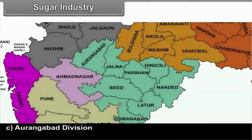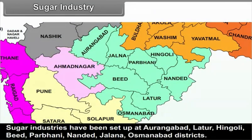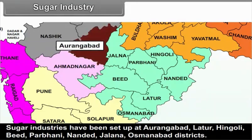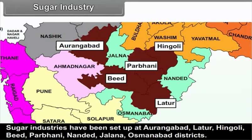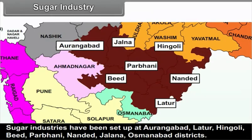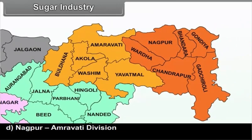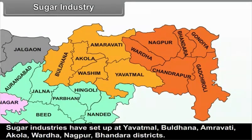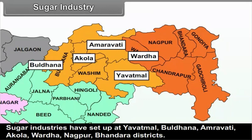Aurangabad Division: Sugar industries have been set up at Aurangabad, Latur, Hingoli, Beed, Parbhani, Nanded, Jalna and Osmanabad districts. Nagpur-Amravati Division: Sugar industries have been set up at Yavatmal, Buldana, Amravati, Akola, Wardha, Nagpur and Bhandara districts.